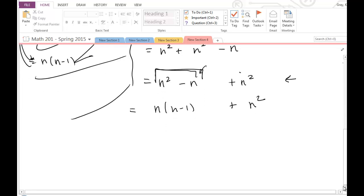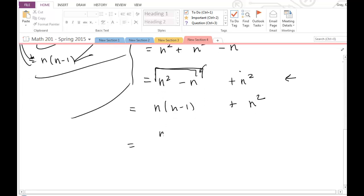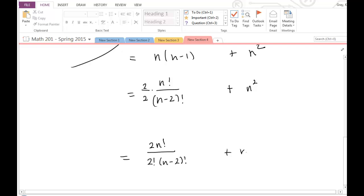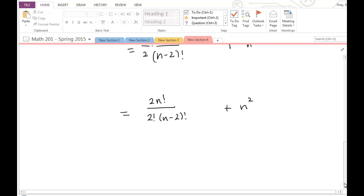And then I know that n times n minus 1 is the same thing as n factorial divided by n minus 2 factorial. And then I know that I can multiply the top and bottom by 2. Since that's just 1, I can multiply anything by 1. And then I have 2 on the numerator. And then 2 is just 2 factorial, so I can write that as 2 factorial. So I'm getting closer. I'm going to let this 2 hang out in front.